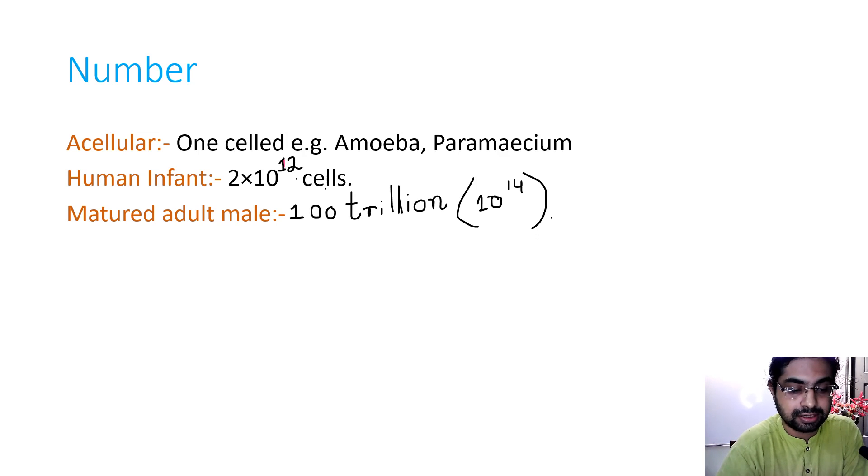Human infant: we have human infants that have 2 × 10^12 cells in their body, and a mature adult male has got 100 trillion cells, that is 10^14 cells.